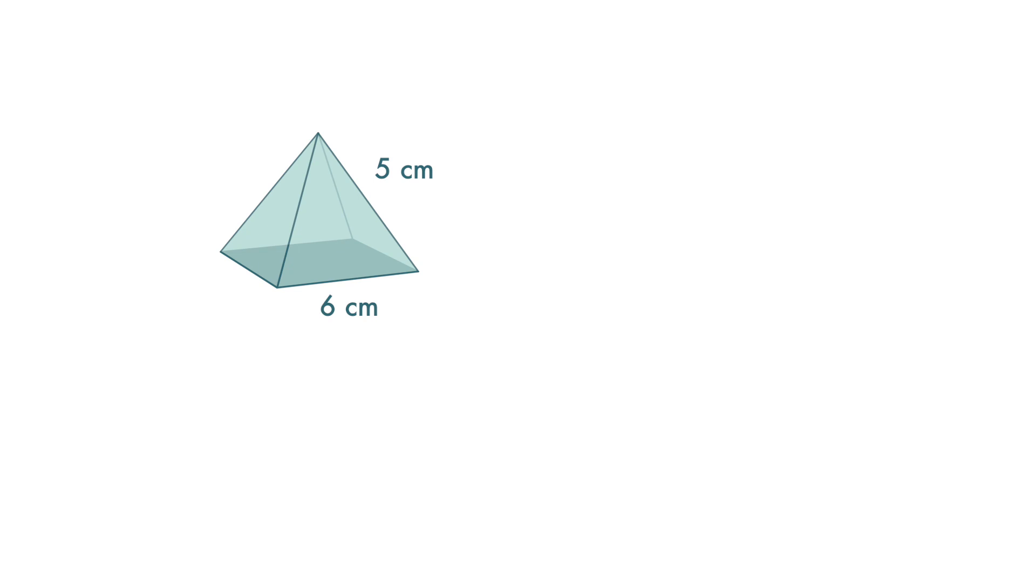We want to find the surface area of this pyramid with a square base. Now if we open it up and get the net of this pyramid, we can see that it is made up of one square base and four triangles.